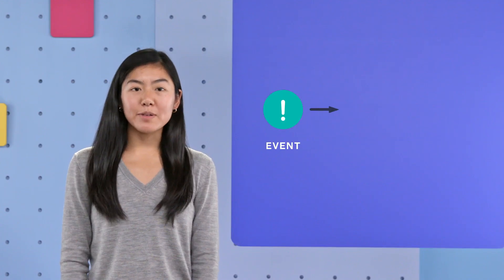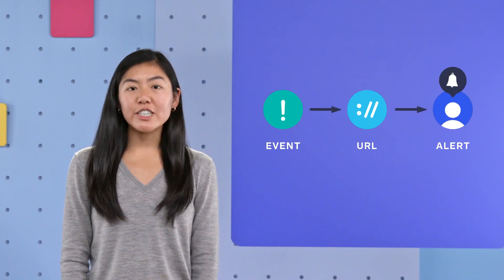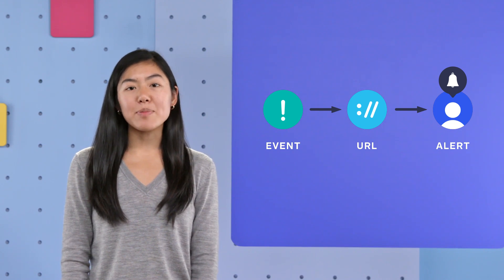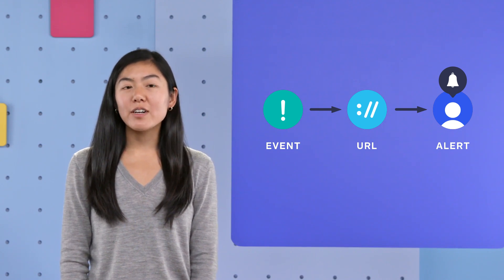Hi, I'm Lindy from Square. Today I'm going to talk about webhooks and how to use them. You can think of webhooks as a real-time notification. It's an HTTP call that Square makes to inform you of an event that's happened in a Square account. Using webhooks means that you don't have to constantly poll Square's APIs to see if a change has occurred.